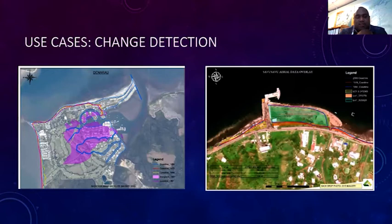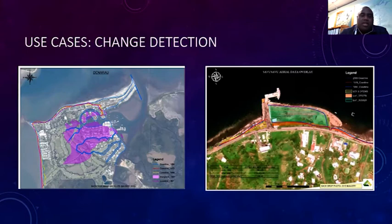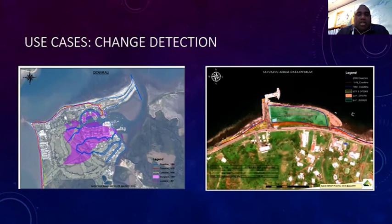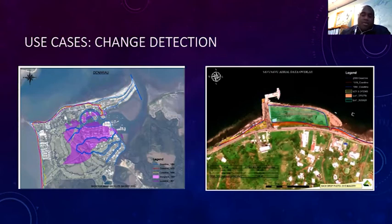Another use case is change detection. There are many developments along Fiji's coastal areas, and one of our main responsibilities in the Geospatial Division is identifying the causes of accretion or erosion — specifically whether land was reclaimed or accreted through natural causes such as a cyclone or tsunami. Using satellite imagery and aerial photography, we are able to identify these changes and calculate the volume of land affected.